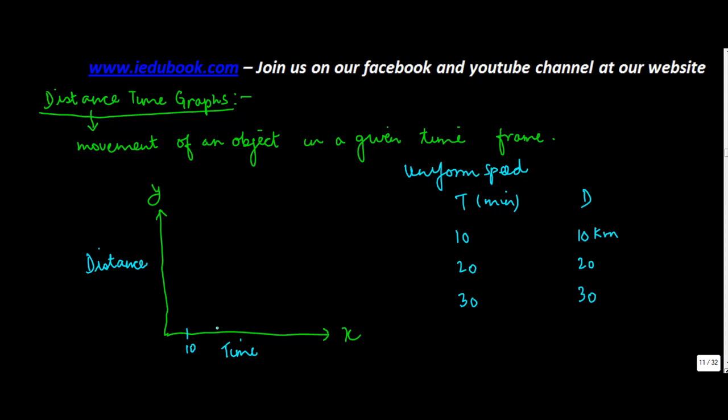Let's say this is something like this. Now when you plot this, 10-10 will be here, 20-20 here, 30-30 here, 40-40 here, 50-50.